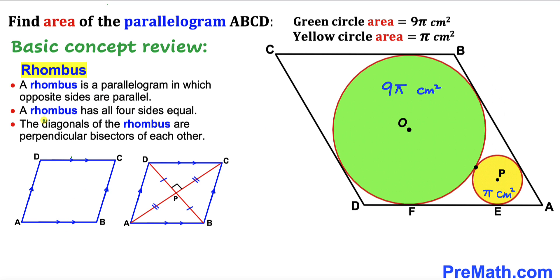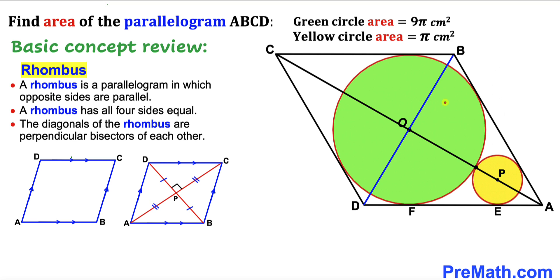Furthermore, the diagonals of a rhombus are perpendicular bisectors of each other. The two diagonals intersect at a point and the angle between them is 90 degrees. This segment is equal to that segment, and likewise the other pair of segments are equal too. So if we draw diagonals BD and AC, they meet at a right angle.